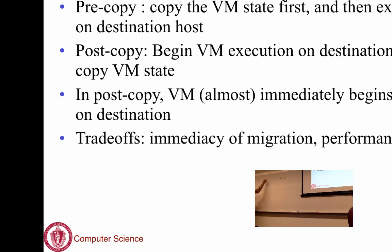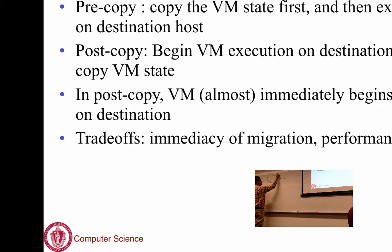Pre-copy goes on for a long time — you copy the VM memory state, and then at the end you copy the CPU state. Once that's done, you can start running on the destination. It's called pre-copy because you're first copying your state — specifically memory state — and then running on the destination. During this whole time you're still running on the source.